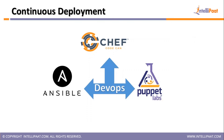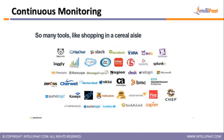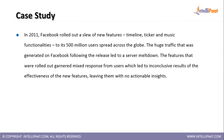Under continuous deployment we'll look at tools like Chef, Puppet, and Ansible in detail. For continuous monitoring, we will go ahead and install tools like Nagios and walk through how to install and configure the Nagios tool.